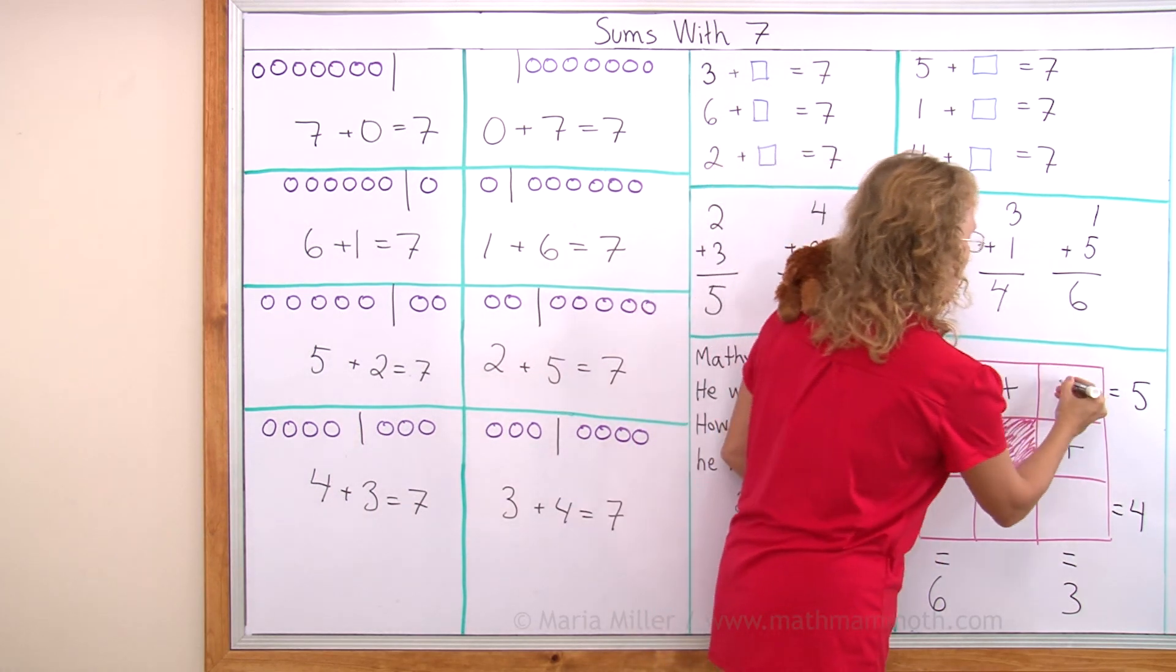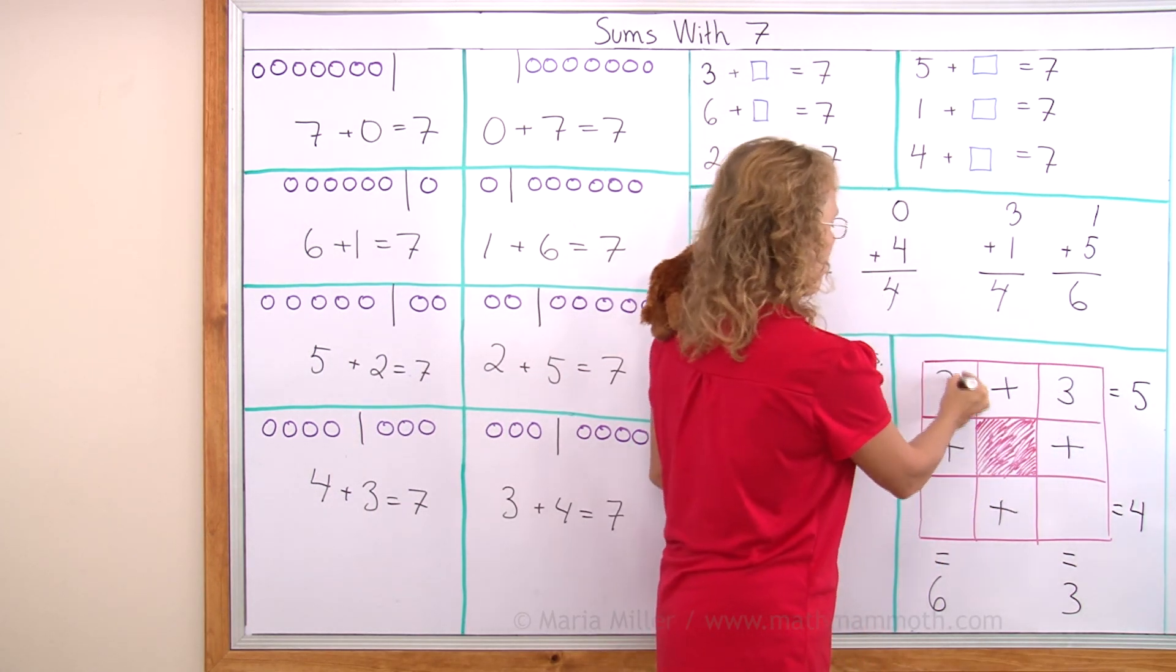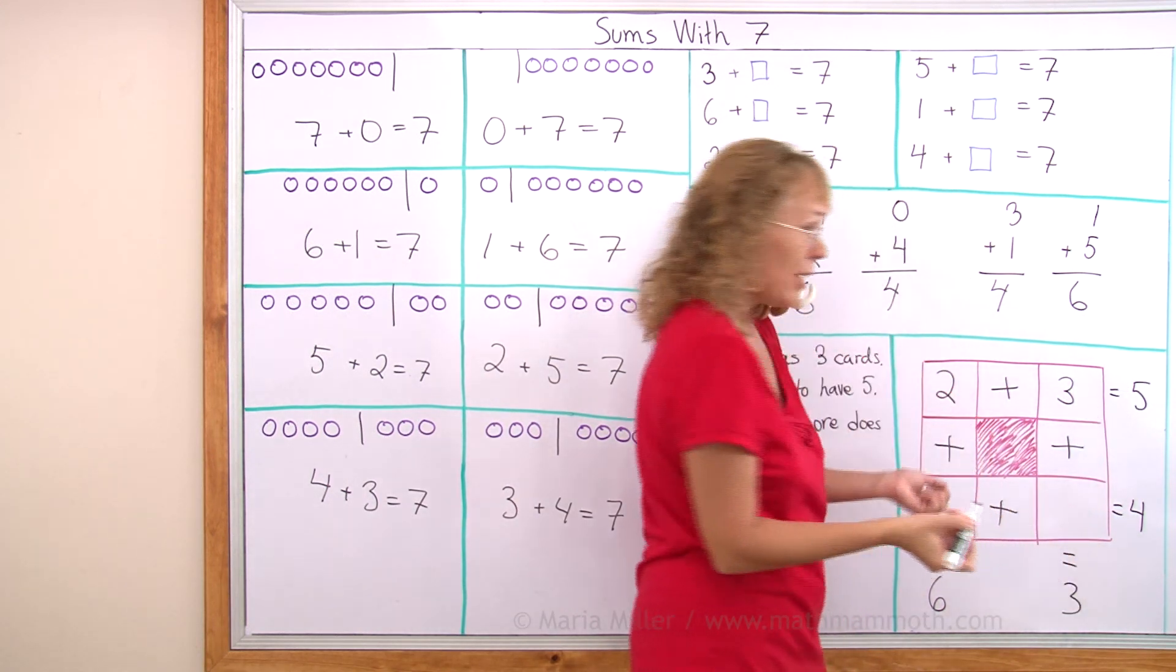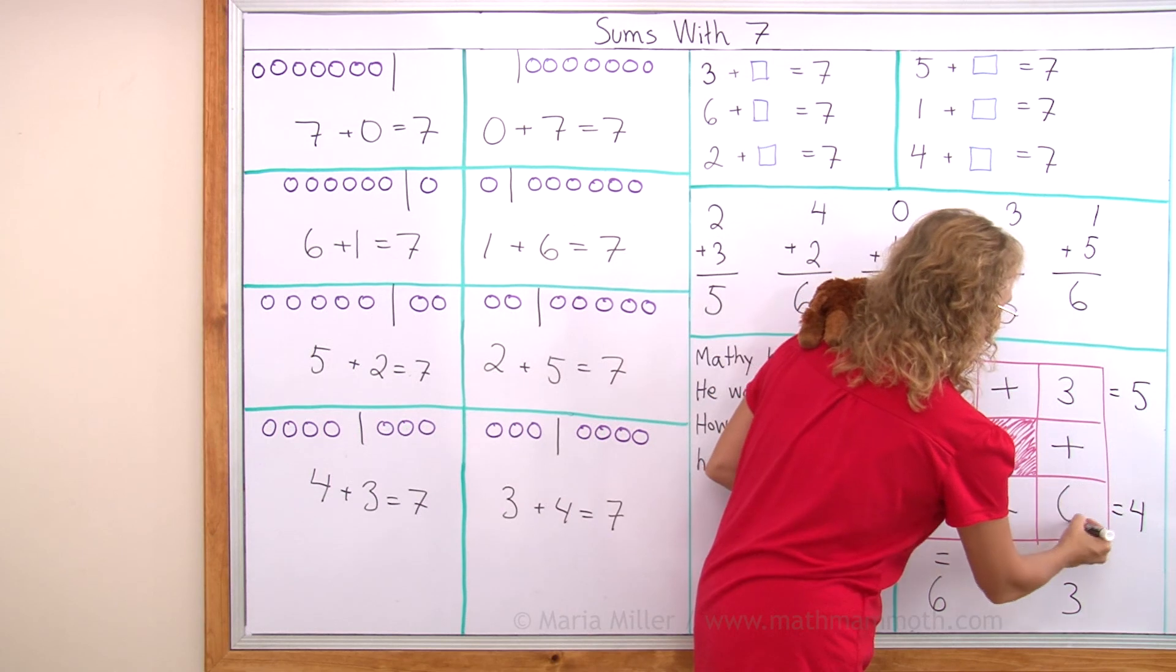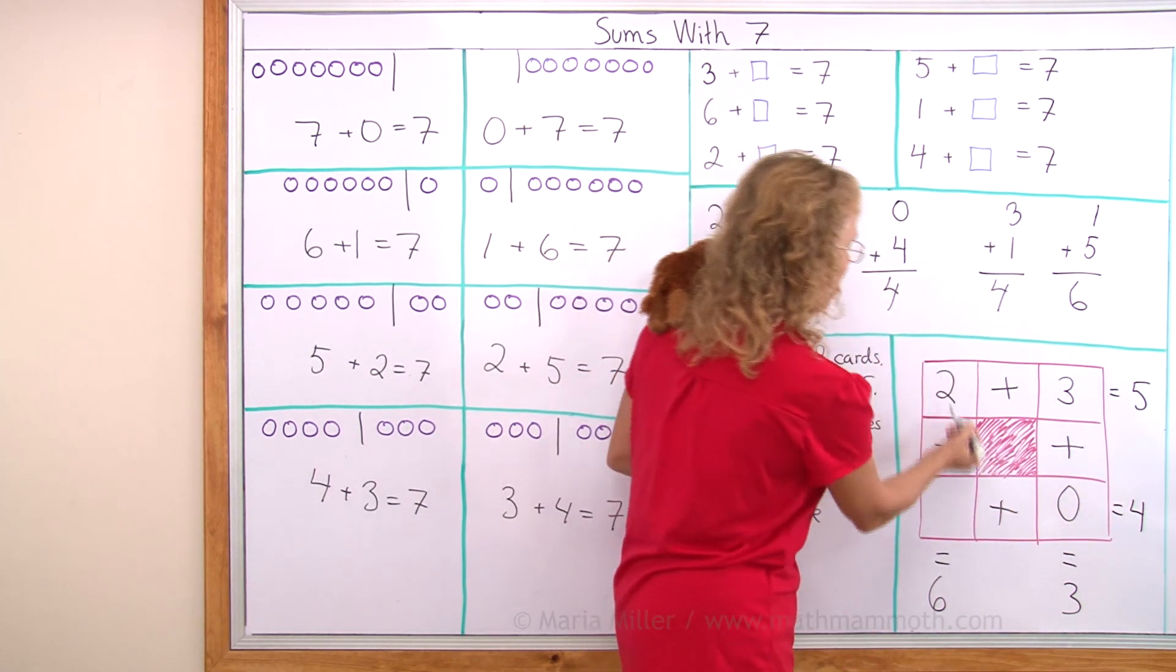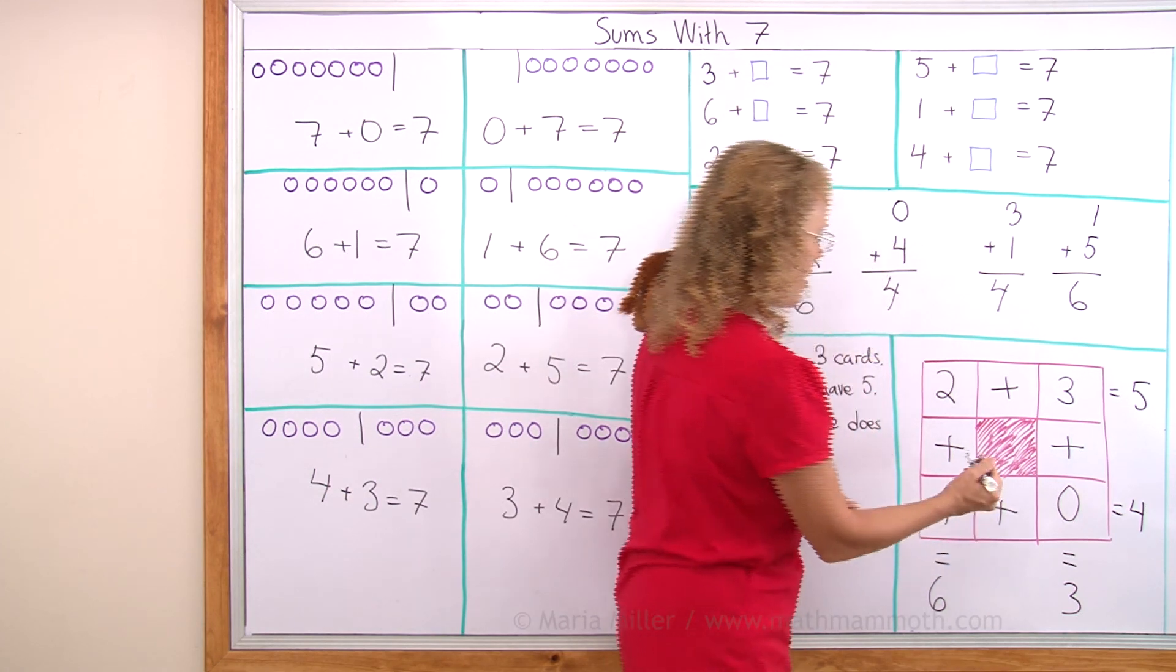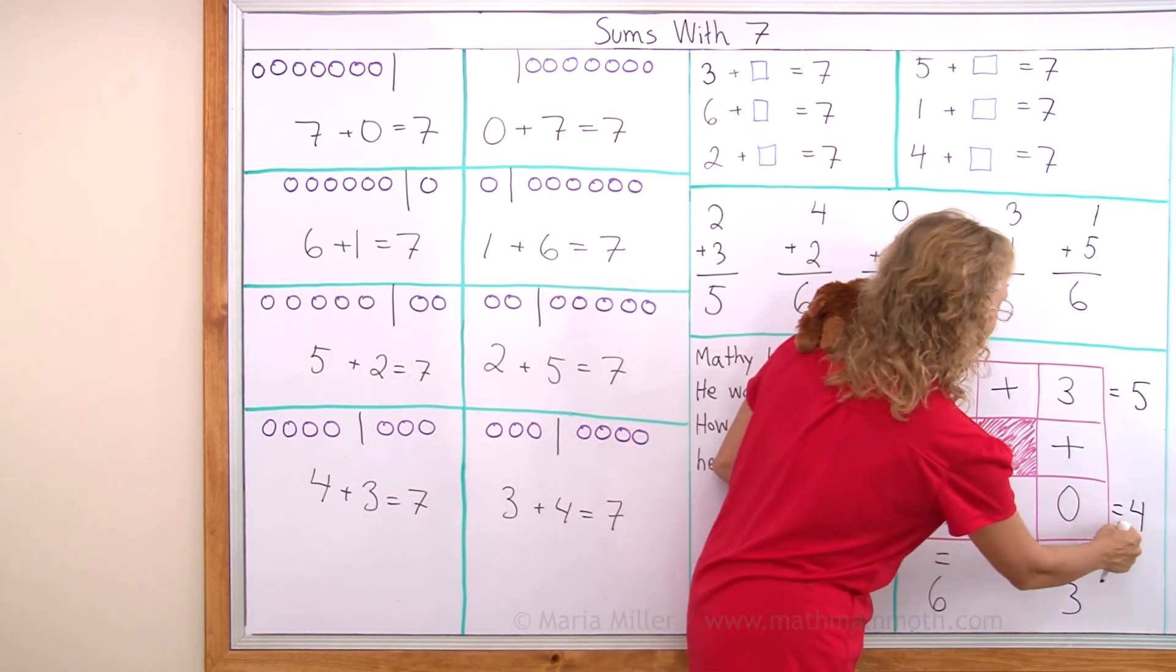Let me try three here. Two plus three. Two plus three makes five. And then three plus how many makes three? Zero, right? Yeah, that works. Okay. How about here? Two plus how many makes six? That would be four. And then I check this way. Four plus zero. Yes, it equals four.